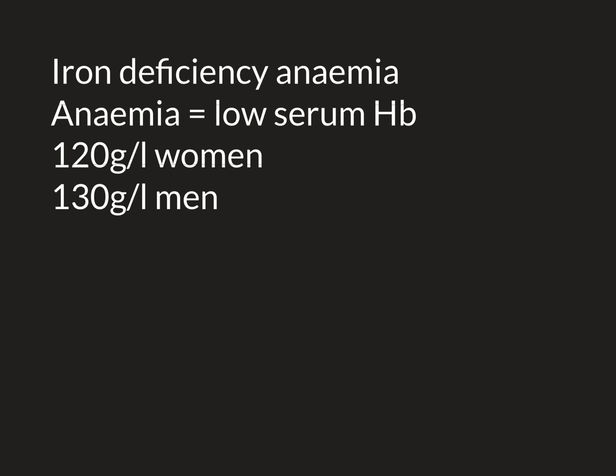What does iron deficiency result in? Remember, the main purpose of iron is to be used in the production of haemoglobin in red blood cells. Red blood cells are created in the bone marrow. If an individual is iron deficient, then fewer red blood cells will be made by the bone marrow, and the red blood cells that are created will have less haemoglobin than they should have.